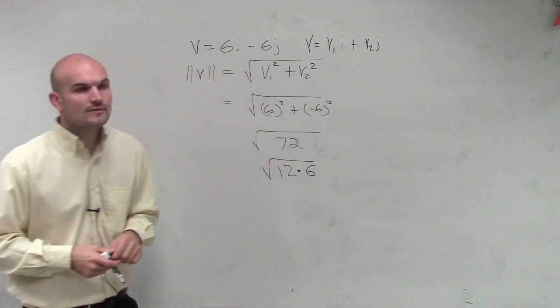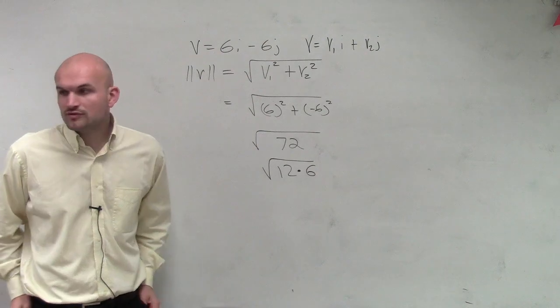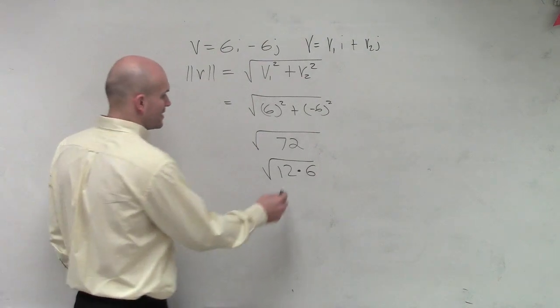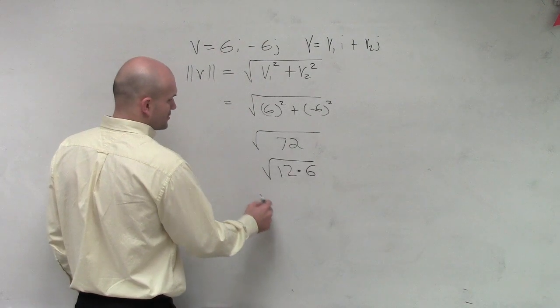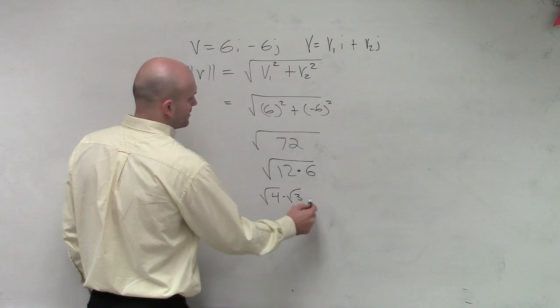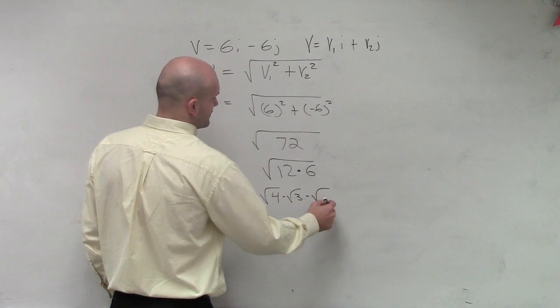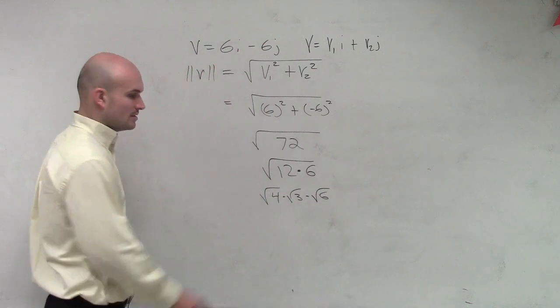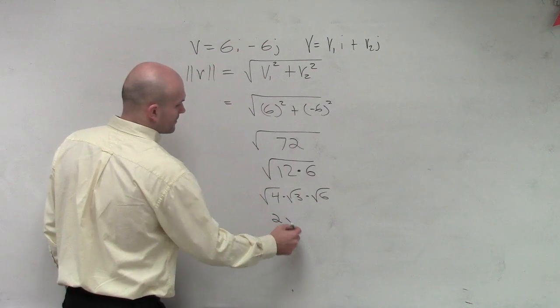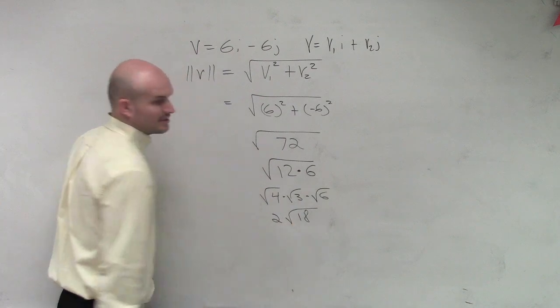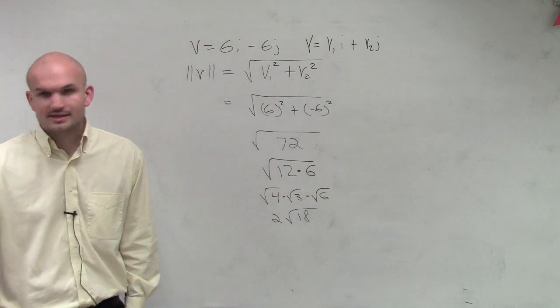Can I simplify now 12? Yeah, you can break this down into the square root of 4 times the square root of 3 times the square root of 6. Square root of 4 is 2 times the square root of 18. Can I break down the square root of 18? Yeah, I did 9 and 2, right?